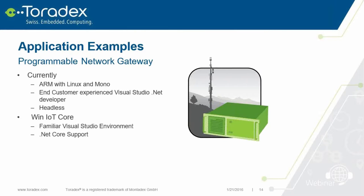The second example is a gateway that allows end customers to run their own applications with a lot of customization. The end customers have a lot of experience with .NET and Visual Studio. The gateway builder was using PCs before and moved to ARM, currently providing it with Linux and Mono, but they got feedback that customers would really prefer to stay on Visual Studio. They hope with Windows IoT Core they can still use ARM but provide the full Visual Studio and .NET experience — and it's a headless device, so no screen required.